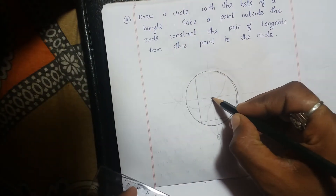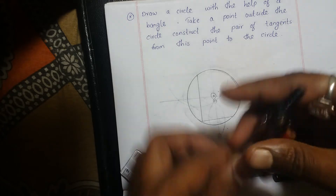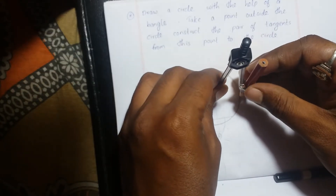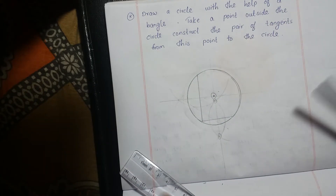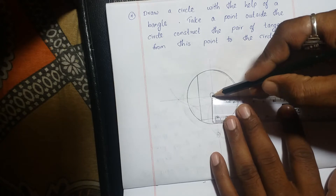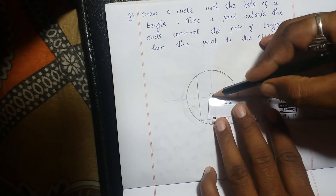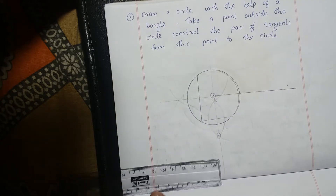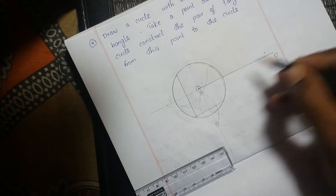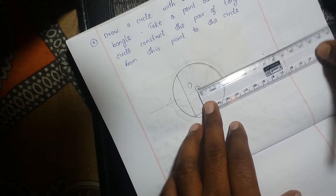These two lines are intersecting here — this will give you the center of the circle. This is the center of the circle. From this center, draw a line segment to an external point somewhere outside the circle and connect these two. Name this point P and the center O. The distance is almost 8 centimeters.